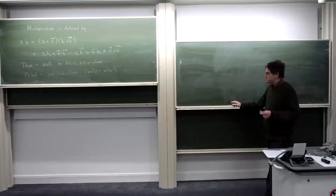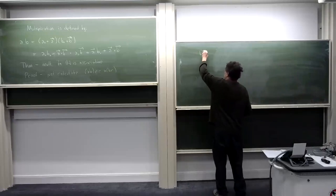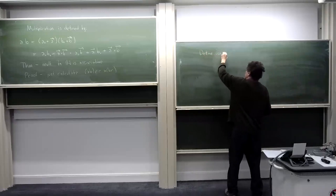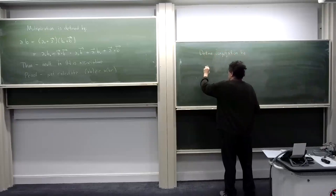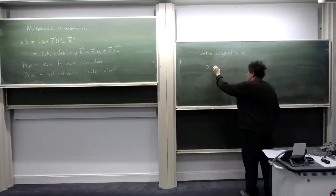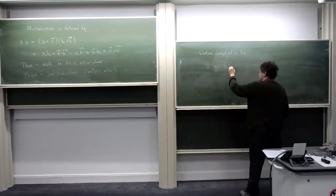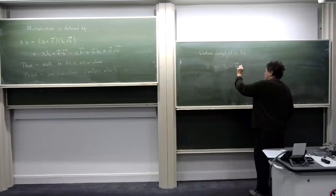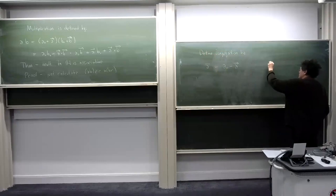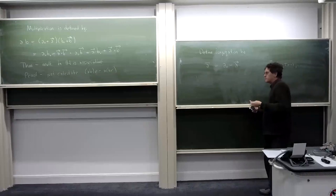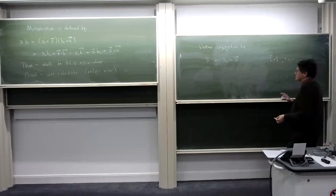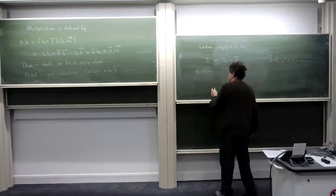We can define quaternion conjugation, similar to complex conjugation. The conjugate of a quaternion keeps its scalar part the same but switches the sign of its vector part. So one-conjugate is one, but i-conjugate is negative i, and so on. It's like complex conjugation, but you've got j and k in addition to i.